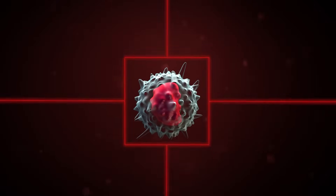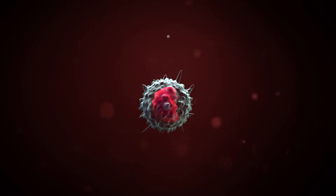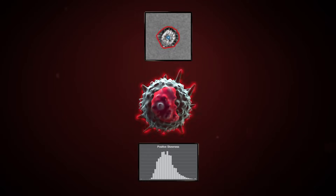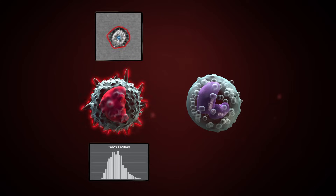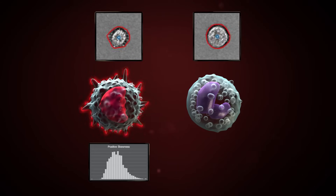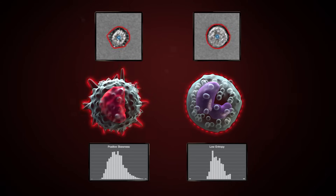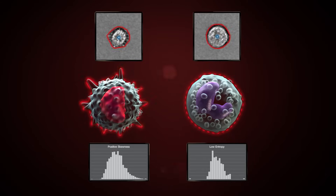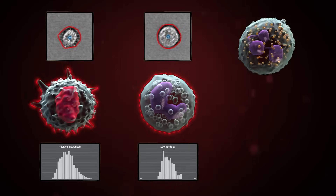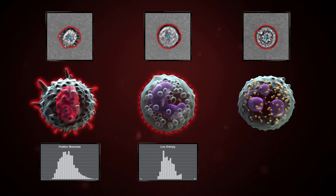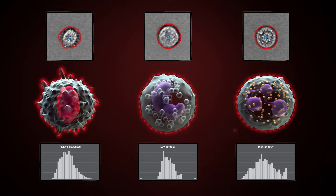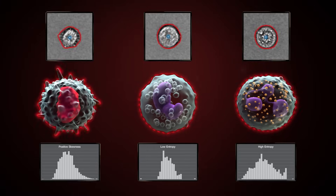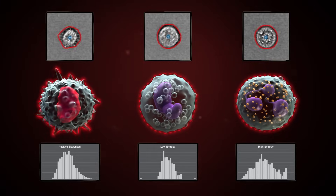Empower your data with measurements of cell characteristics such as cell size, shape, granularity, and other morphological features captured by a high-speed brightfield camera. These new and distinct image parameters can be combined with fluorescence parameters to enable more accurate identification of rare events, cell-to-cell interactions, and unique cell populations.